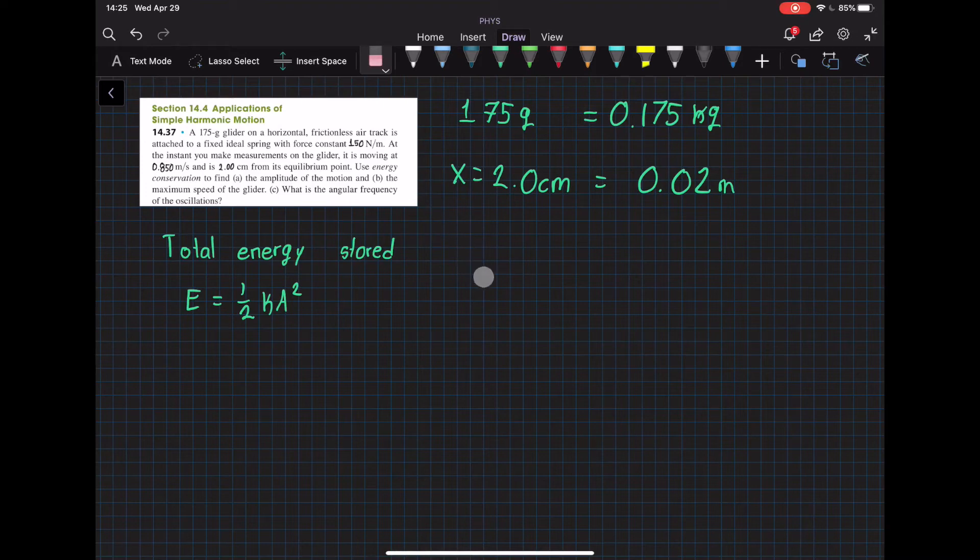Hello guys, now we're going to do problem 14.37 which is this one right here. We need to find the amplitude of motion, the maximum speed of the glider, and the angular frequency of the oscillations.